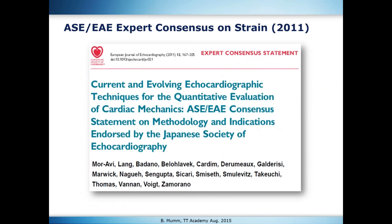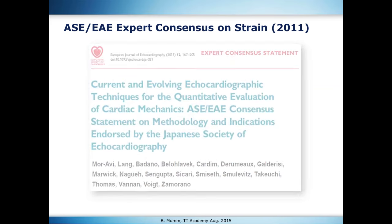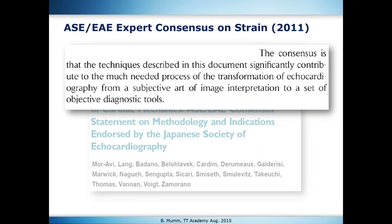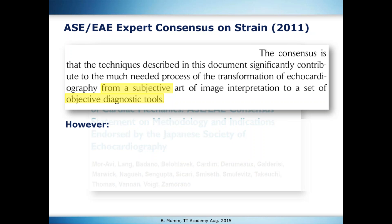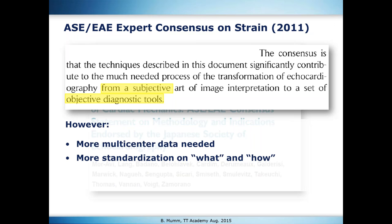Looking at the first consensus papers from the American Society of Echo and the European Association of Echo from 2007 and 2011, they concluded that strain is a very important technique that can help transform echocardiography from a subjective art into a very objective diagnostic tool, because we can quantify with strain much more precisely and reproducibly. However, if we don't agree on where and how to measure and how to name the measurements, we will get different results. So large multicenter studies are needed to define normal values, and we need to standardize what and how we measure — and this standardization needs to happen among all ultrasound manufacturers and workstation providers like TomTech.